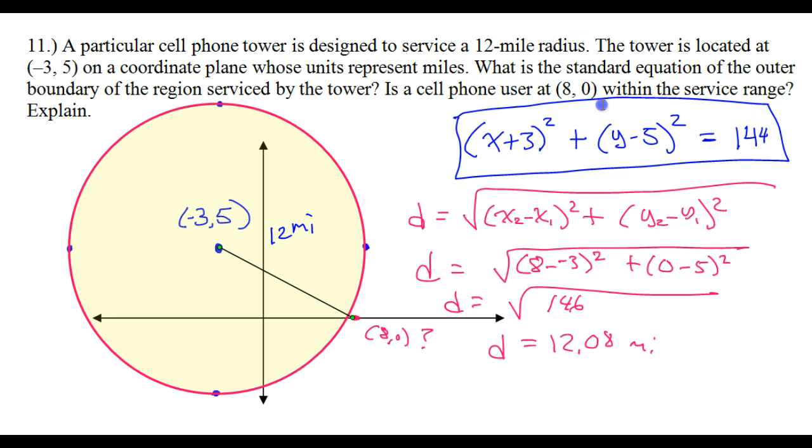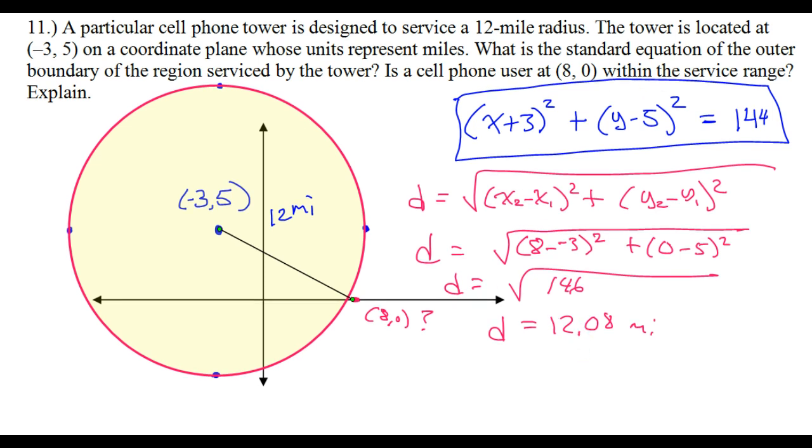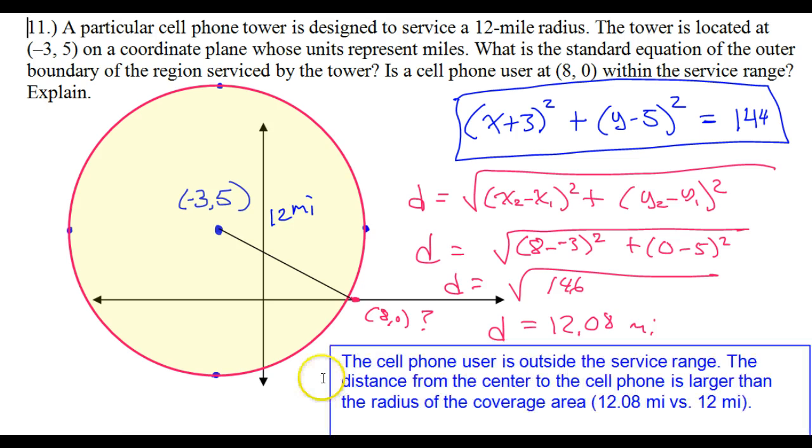So, is the cell phone user within the service range? No. Having done these calculations, you can say, the cell phone user is outside the service range. The distance from the center to the cell phone is larger than the radius of the coverage area. 12.08 miles versus 12 miles.